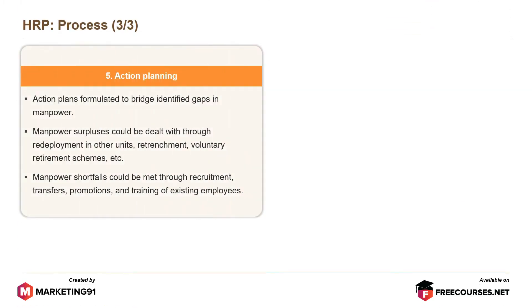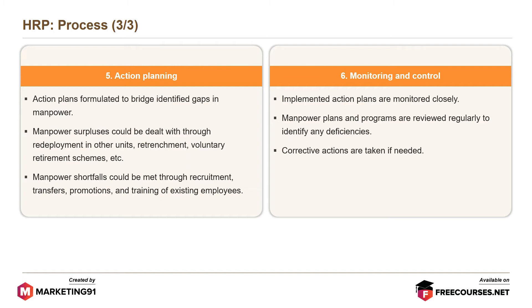The fifth step is action planning, where action plans are formulated to bridge identified gaps in manpower. Manpower surpluses could be dealt with through redeployment in other units, retrenchment, voluntary retirement schemes, etc., while manpower shortfalls could be met through recruitment, transfers, promotions and training of existing employees. The last step is monitoring and control, where implemented action plans are monitored closely, manpower plans and programs are reviewed regularly to identify any deficiencies, and corrective actions are taken if needed.